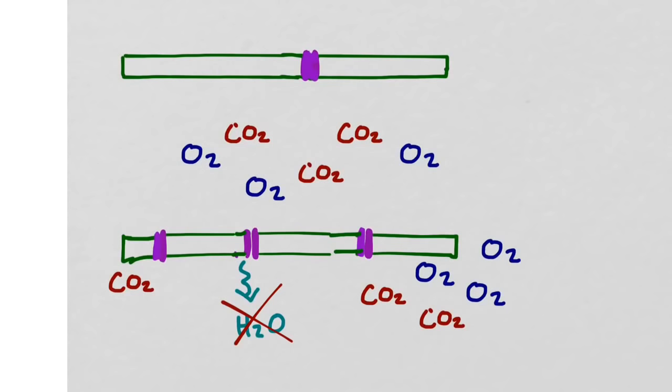However, now I have a limited supply of carbon dioxide available, and so if I continue to do photosynthesis, eventually I'm going to lose all of my carbon dioxide. This puts us in a real quandary here, because the plant can't open its stomata because it's not going to be able to survive if it continues to lose water via evaporation.